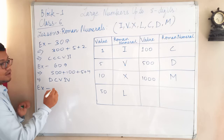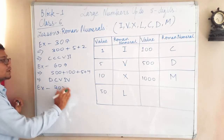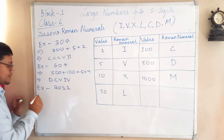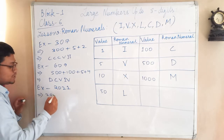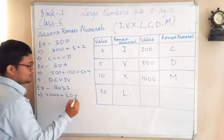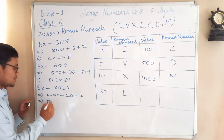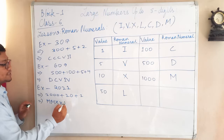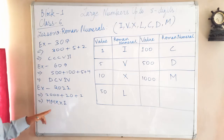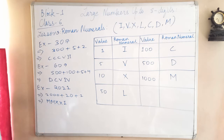Now let us consider the present year. How will you represent 2021 in the Roman number system? Two thousand twenty-one is 2000 plus 20 plus 1. Two thousand means two times M, so MM; twenty means two times X, so XX; and one is I. So 2021 is written as MMXXI. Very simple, not that hard.